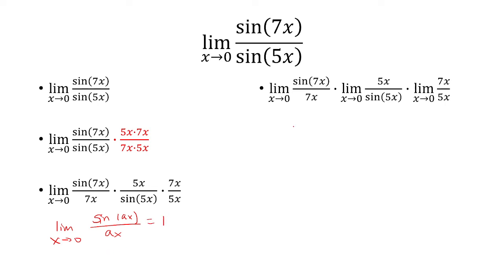To prove it, we could just let u equal ax. As x approaches 0, u will also approach 0. So this limit becomes limit as u approaches 0, sine of u over u, and we know that this is 1.